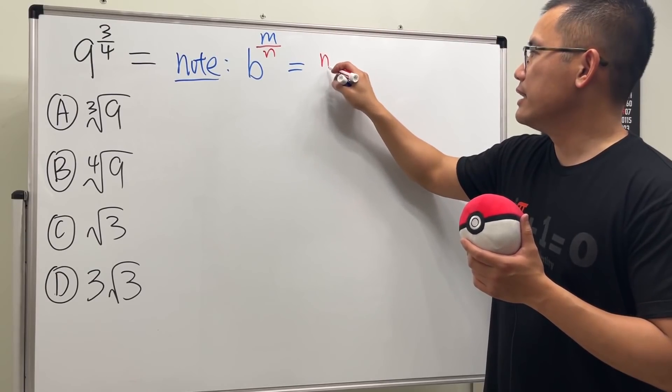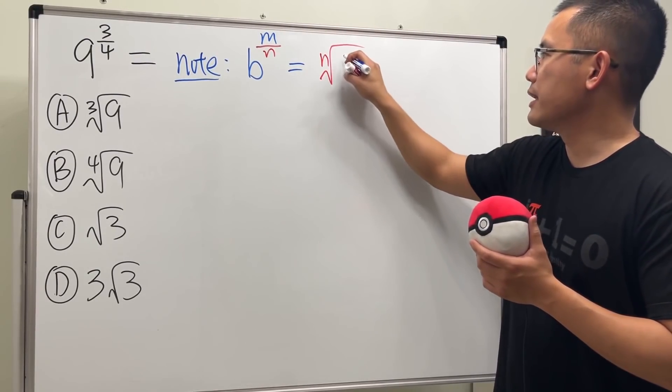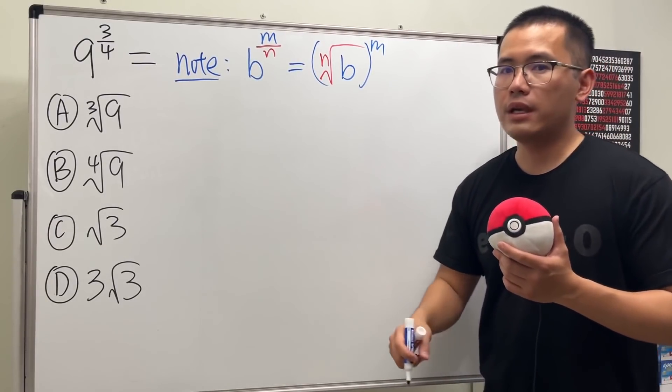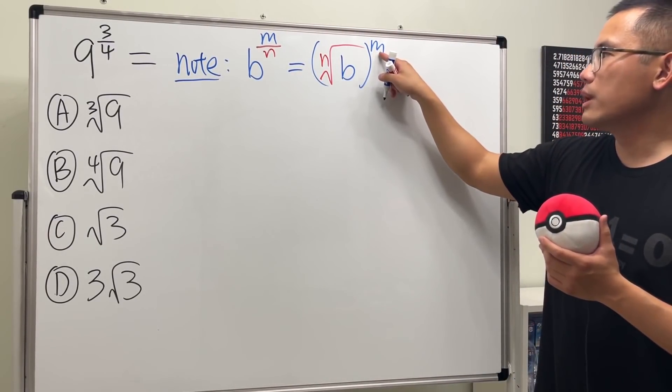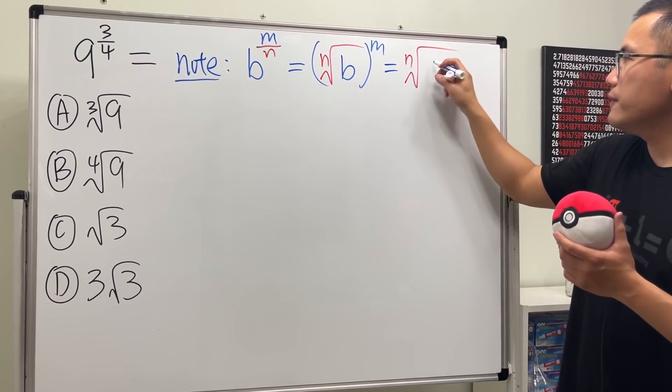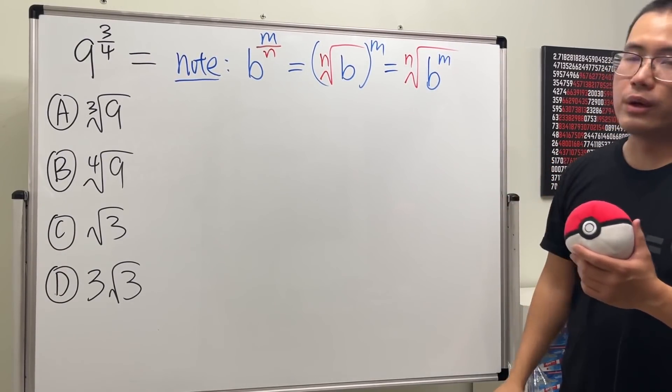And we can first write it as the n's root and we can put the b on the inside and then the m on the outside. This is the first way. Or the second one is you can put the b on the inside, so it looks like this, the n's root of b to the m's power, and they are equivalent.